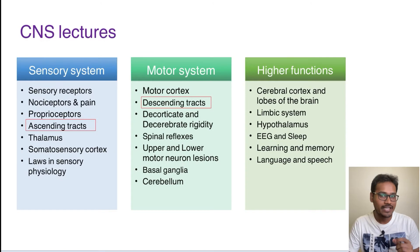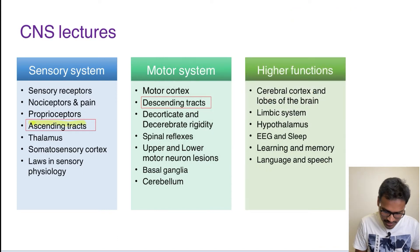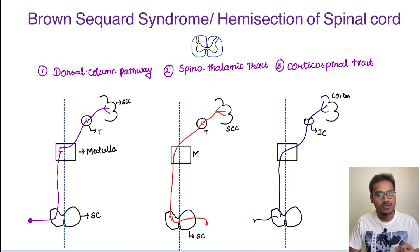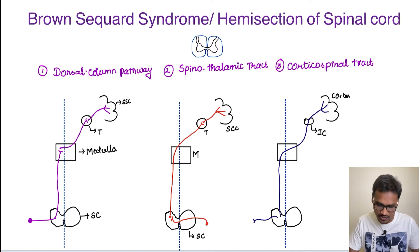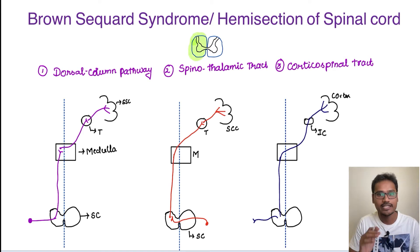In Brown-Séquard syndrome, both the ascending as well as descending tracts are affected. That's why we have highlighted both the ascending tracts as well as the descending tracts. Brown-Séquard syndrome is nothing but a hemisection of the spinal cord — like half of the spinal cord is affected. This disease is also called hemisection of the spinal cord. One half of the spinal cord is completely transected.